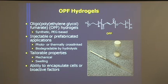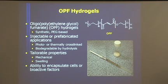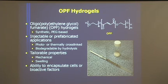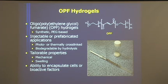Our model system is based on OPF, which is a PEG-based hydrogel — this stands for polyethylene glycol fumarate. What's important here is that we have double bonds that allow for cross-linking, so that by adding initiators and either the presence of light or increasing the temperature from room temperature to body temperature, this can go from a liquid that you can draw up into a syringe to a fairly firm gel. We can use this to encapsulate cells or bioactive factors, and we've shown that it has very good cytocompatibility.